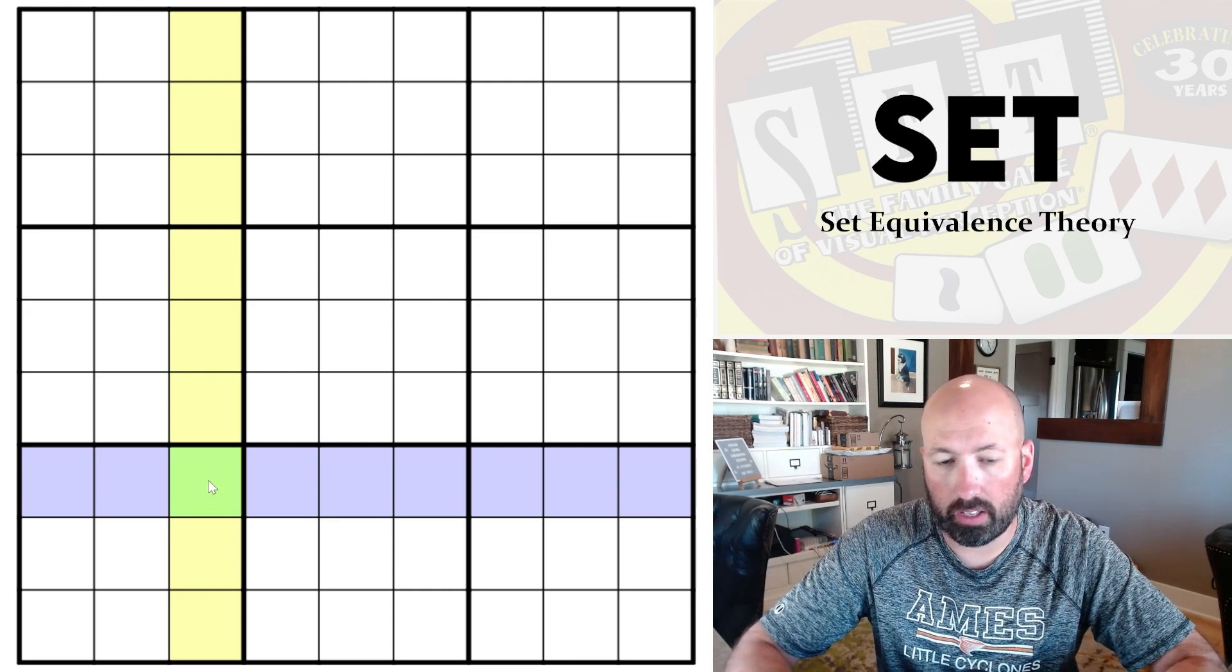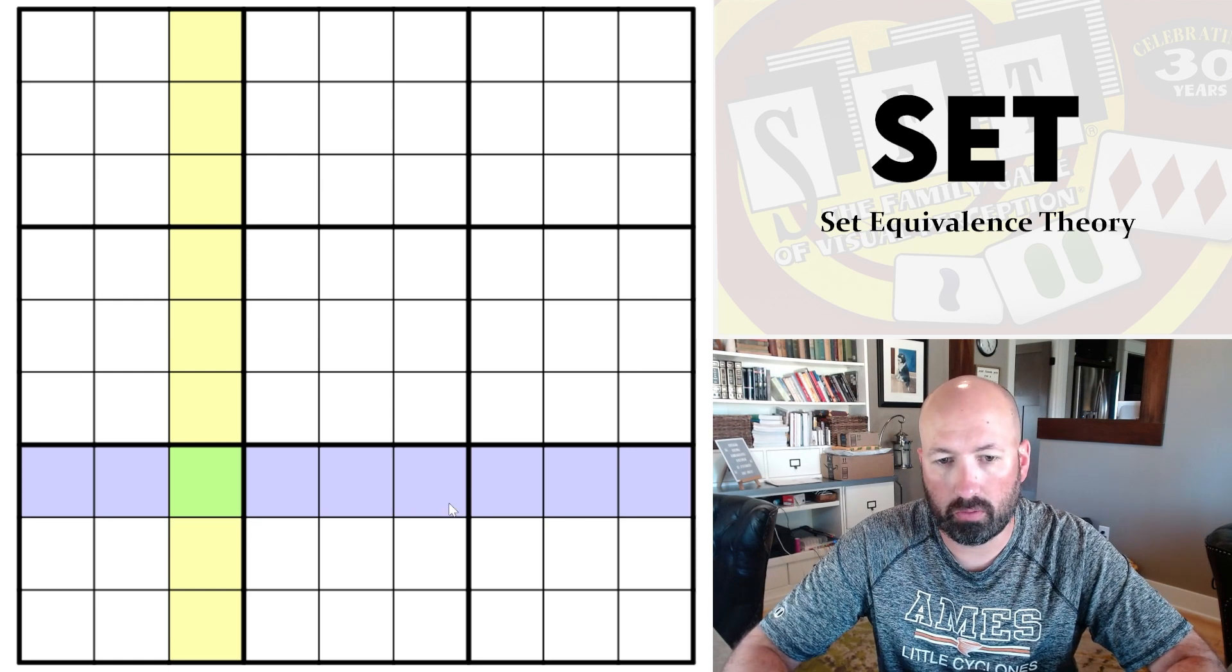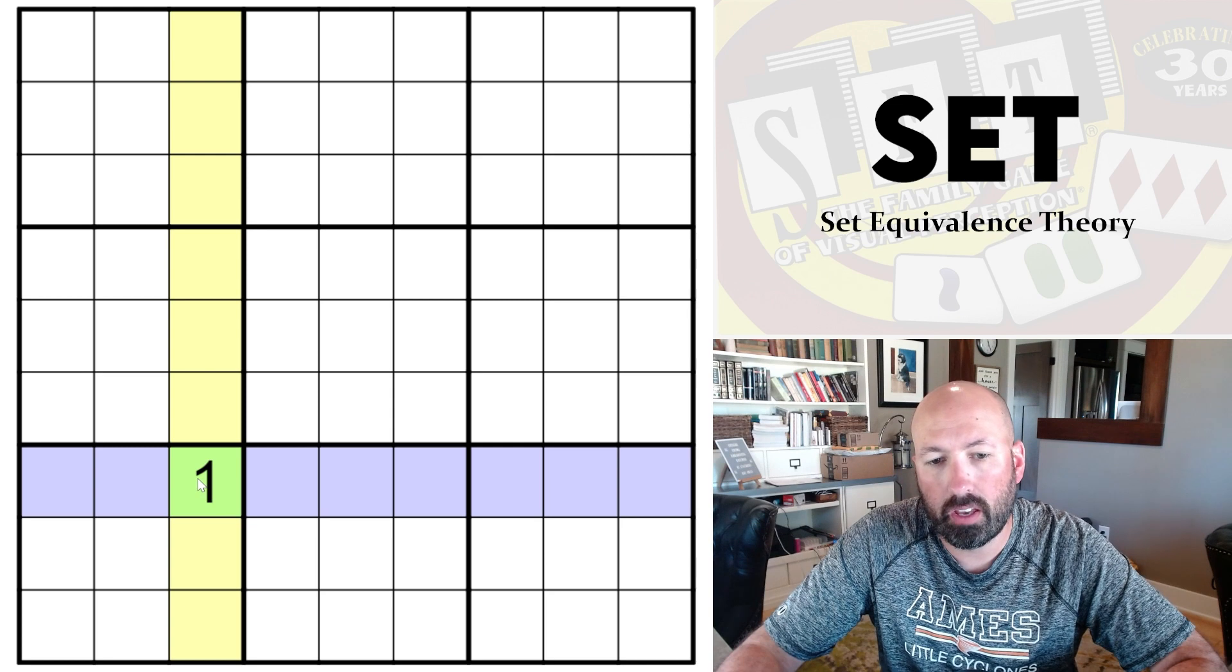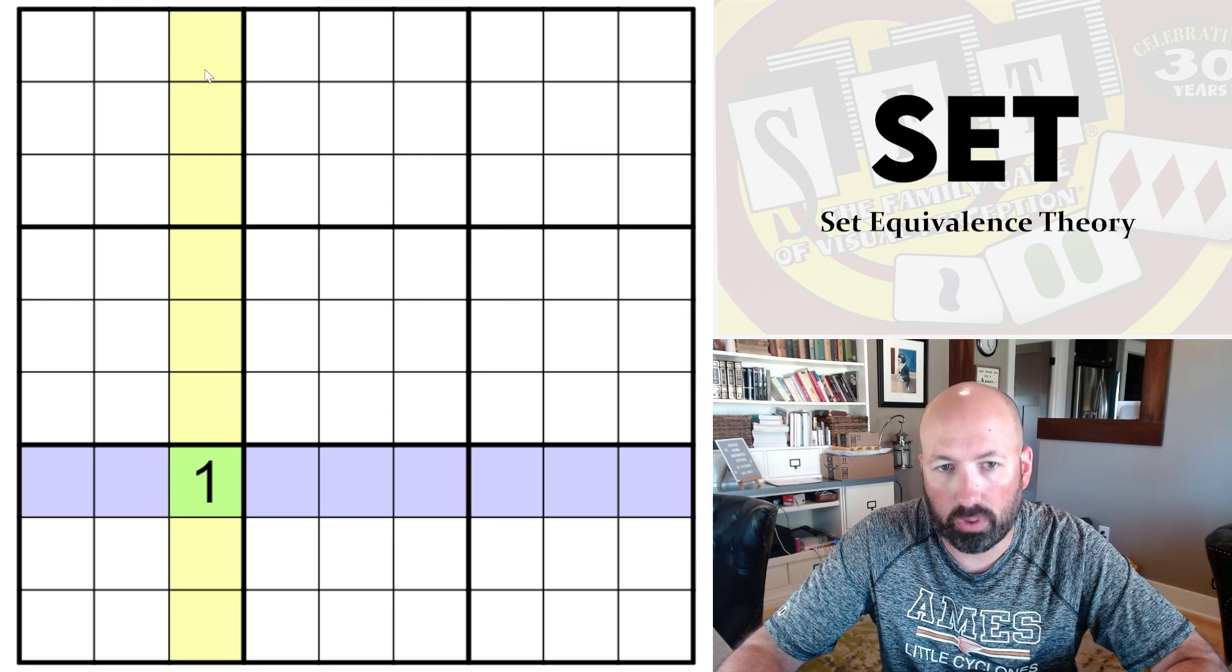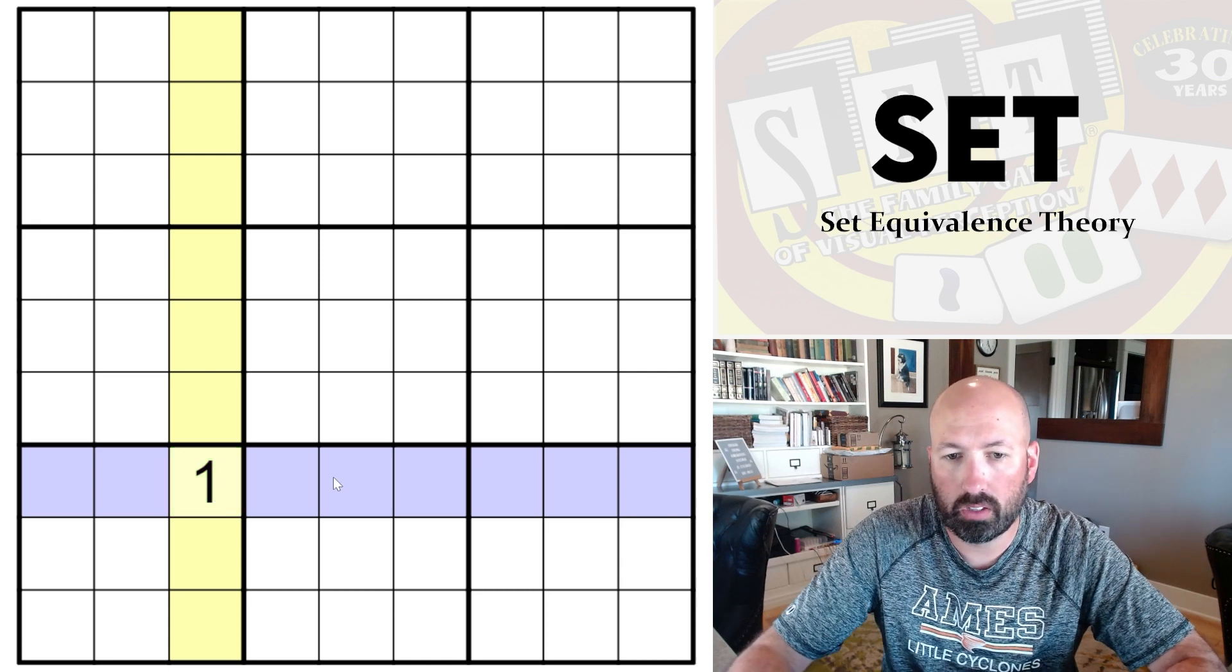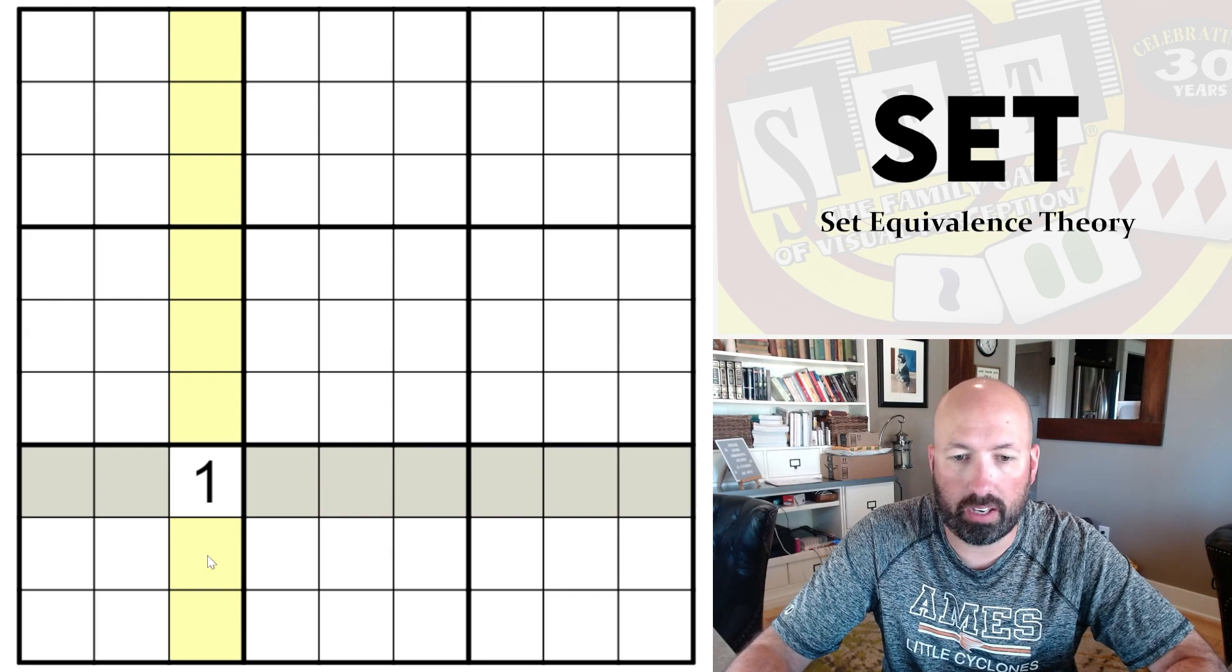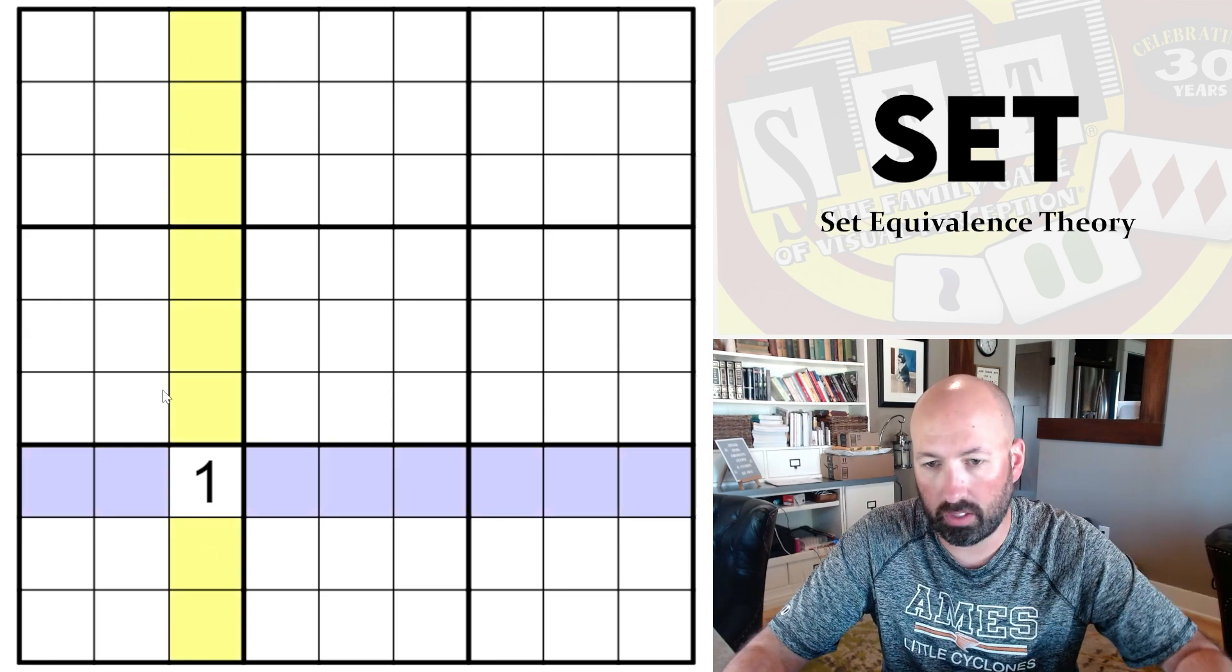Now this green, whatever it is, is going to be in both sets. Let's call it a one. Let's say it's a one. It doesn't really matter. Whatever it is, we're going to say it's a one. The rest of the blue set has to equal the rest of the yellow set. So we can remove the one from the set. The blues are now going to be two through nine, and the yellows are going to be two through nine. So the blue set equals the yellow set.